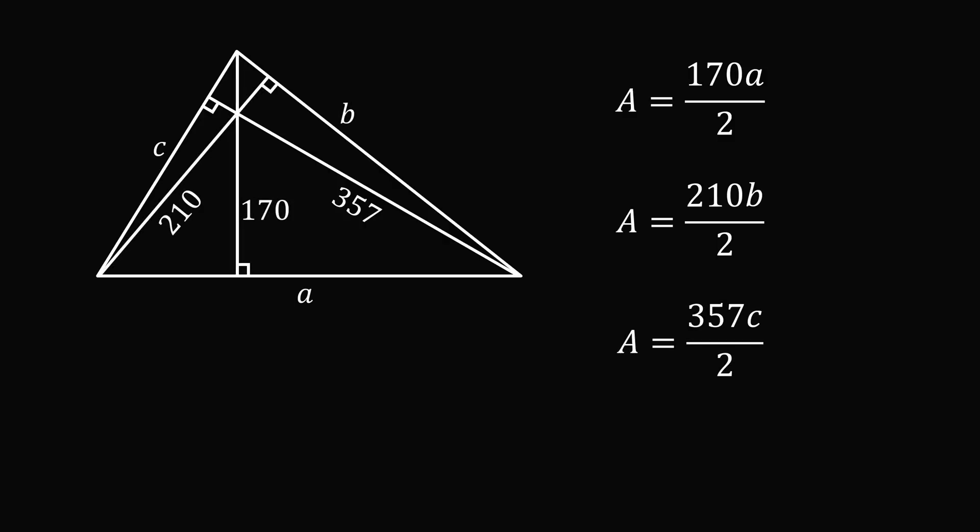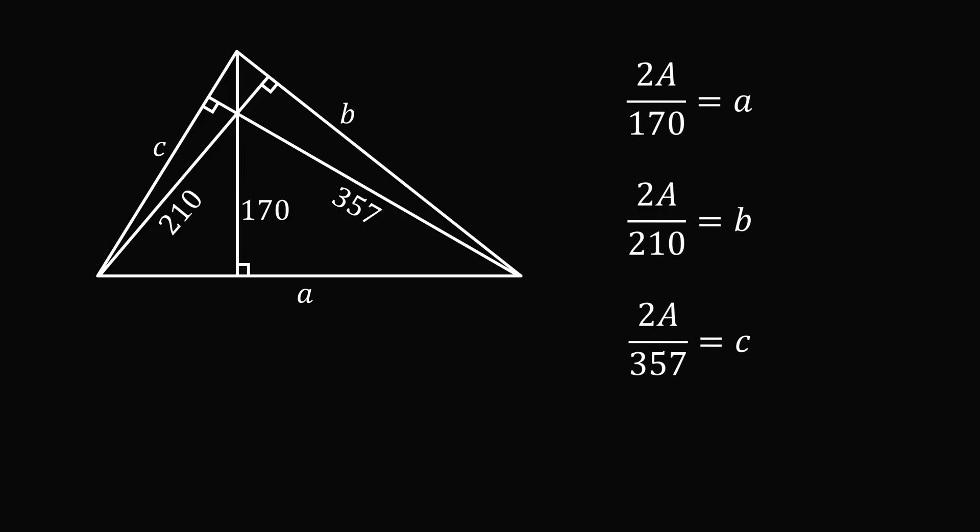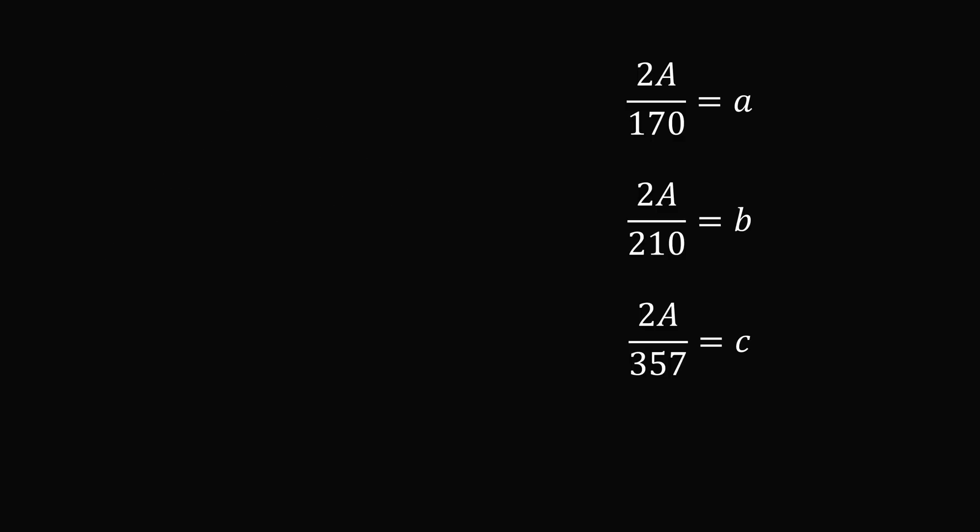Let's solve for the side lengths from these equations. We'll get side length A is equal to 2 times the area over 170, and we get similar equations for B and C.